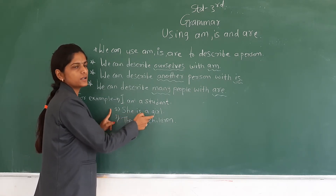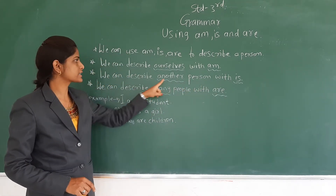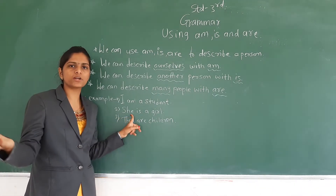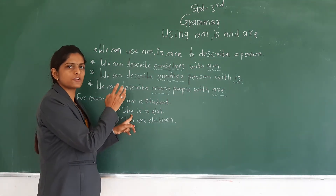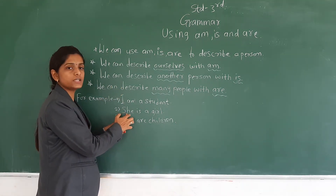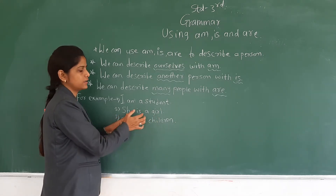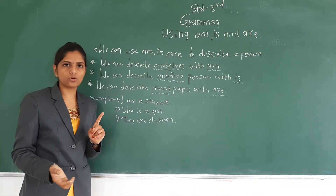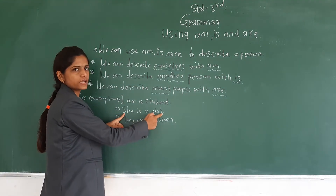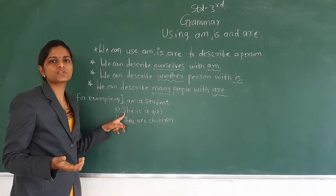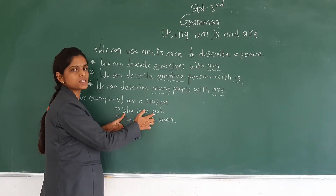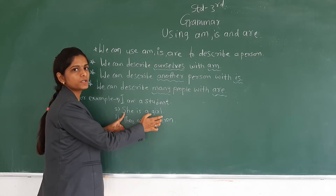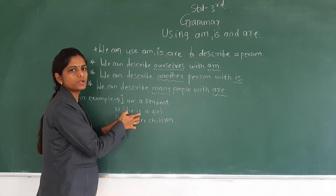The second example: She is a girl. When to use is — we can describe another person with is. She is another person, she is different. I is herself or himself; she is a different person. So she is a girl. From this sentence, we come to know that one person is describing another person. We need to use is when describing another person.